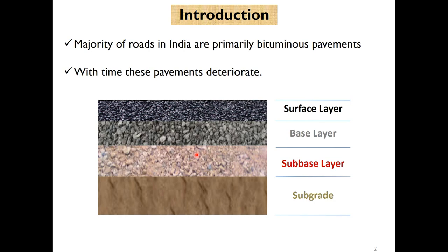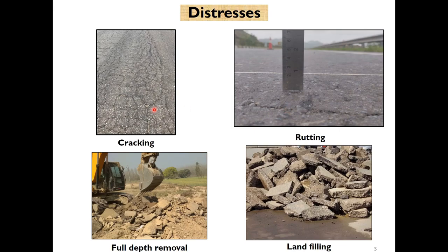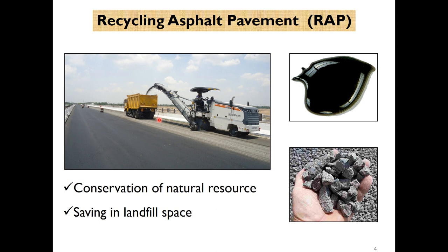The majority of roads in India are primarily of bituminous type, and with time these pavements deteriorate. This deterioration can be in any of the four layers but reflects on the surface in the form of cracking or rutting. When the pavement has failed, there are two options: either full depth removal with the material used in landfilling, or alternatively we can recycle the asphalt pavement, which can conserve natural resources and save landfill space.